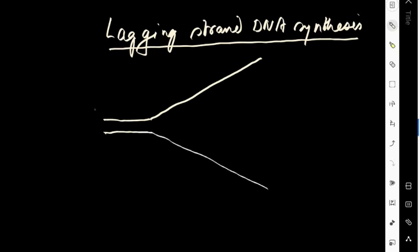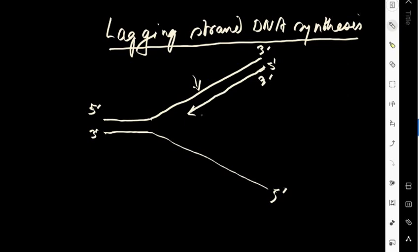If this is the replication fork, with a 5' end here and 3' end here on one strand, and 3' and 5' on the other, then synthesis on this template will begin with the first RNA primer being synthesized and extended in the 5' to 3' direction. The DNA polymerase polymerizes in the 5' to 3' direction, always requiring a 3' hydroxyl end, so it incorporates nucleotides continuously without dislodging itself on this strand.